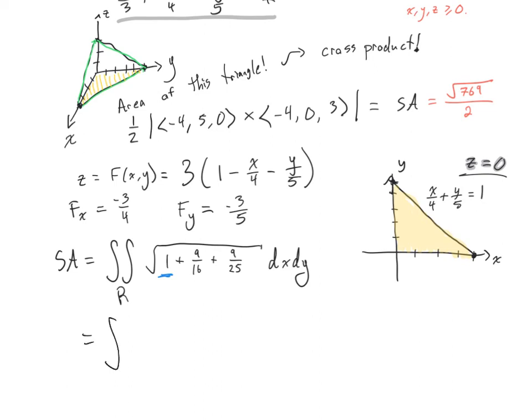So my new bounds, let's do, I guess I wrote dx dy. Let's do dy dx. Let's move the x's on the outside. So I'm going to make x start at 0 and go up to 4. And y is going to start also at 0.